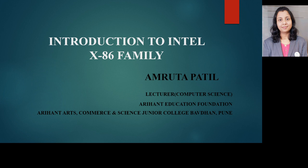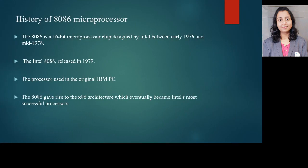Today I am here to explain the introduction to Intel 8086 family, that is the x86 family. The 8086 microprocessor is a 16-bit microprocessor chip designed by Intel between early 1976 and middle of 1978. The Intel 8088 was released in the year 1979, and was the processor used in the original IBM PC. The 8086 gave rise to the x86 architecture which eventually became Intel's most successful processors.